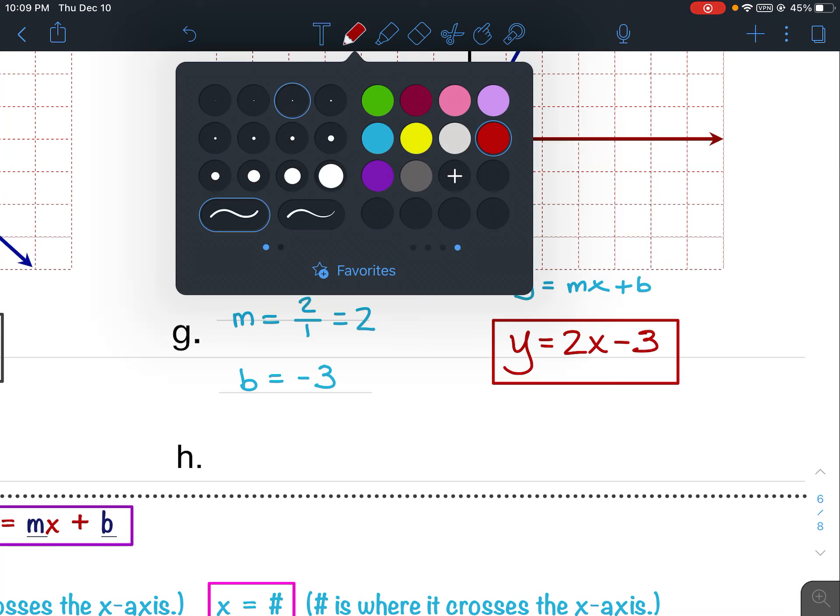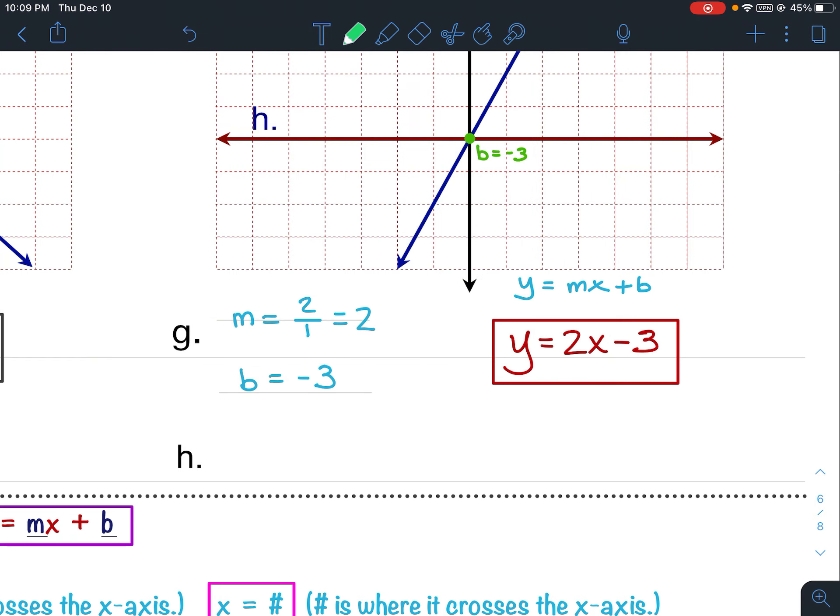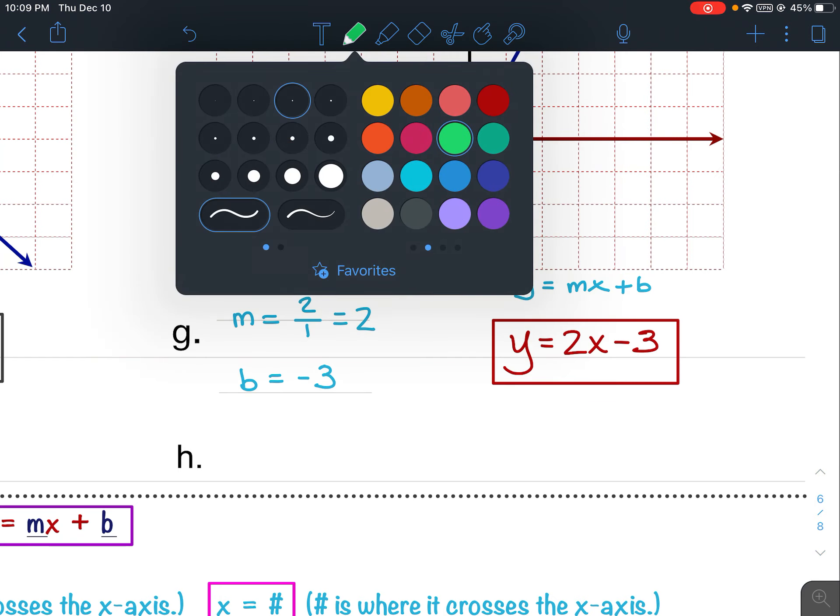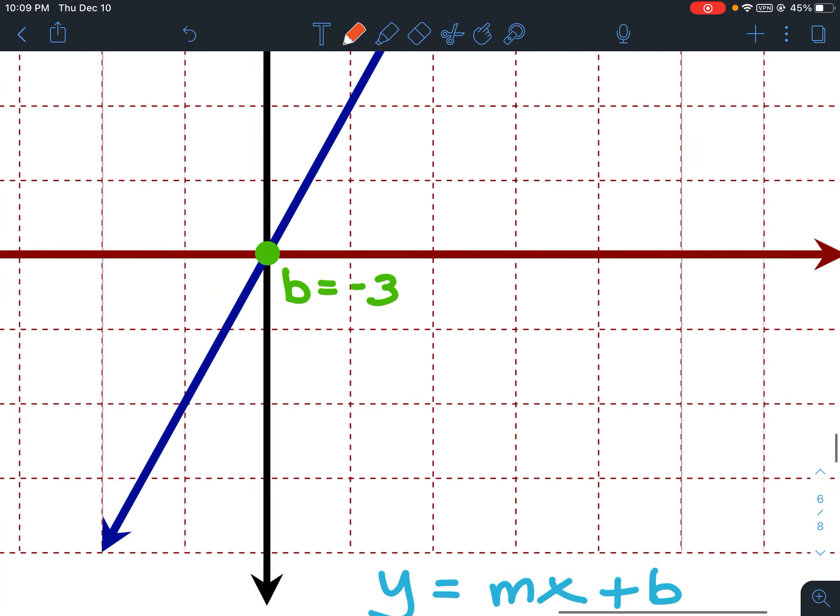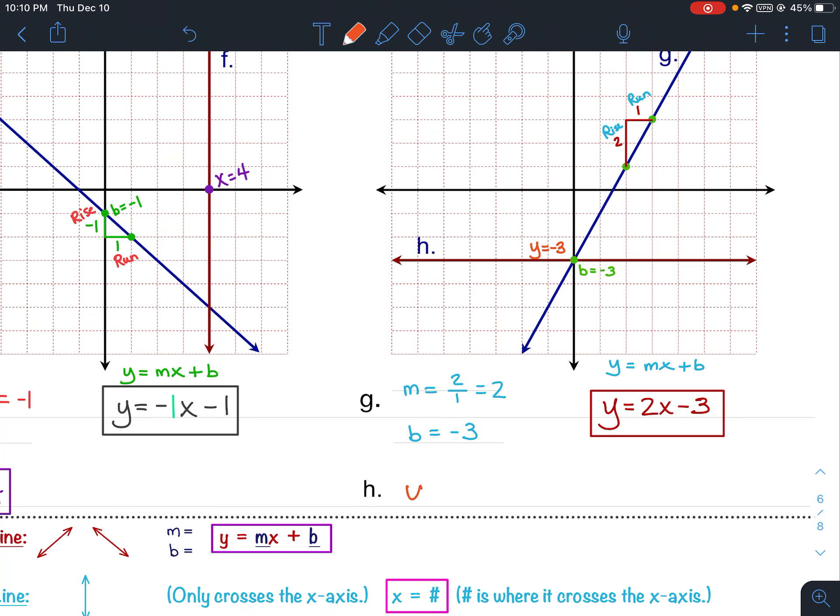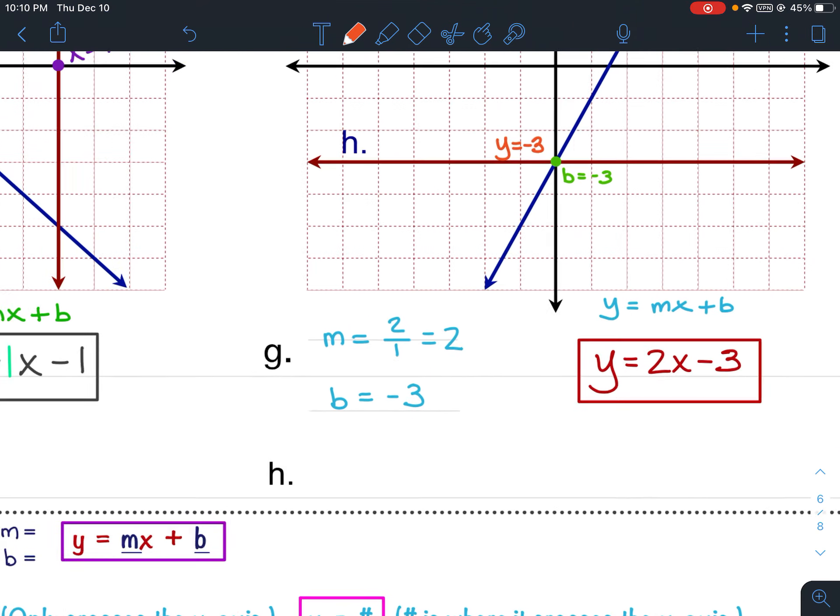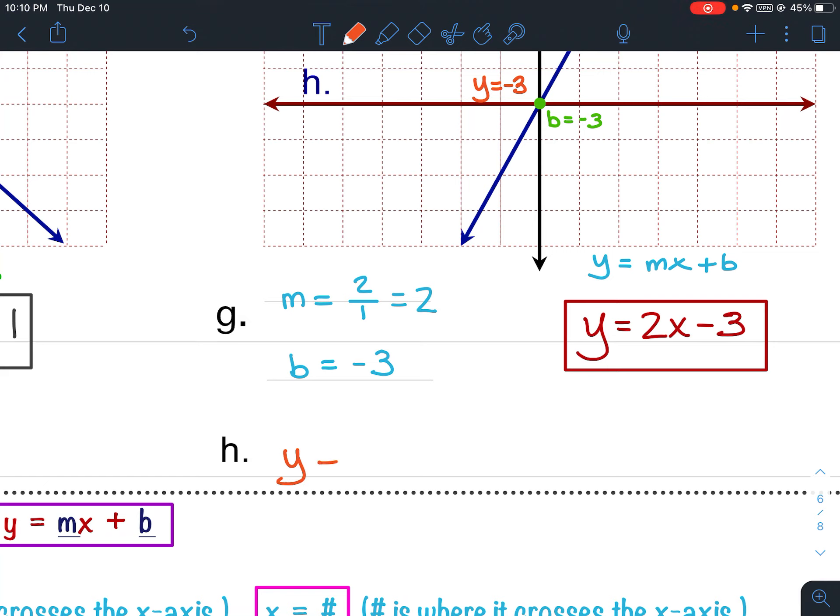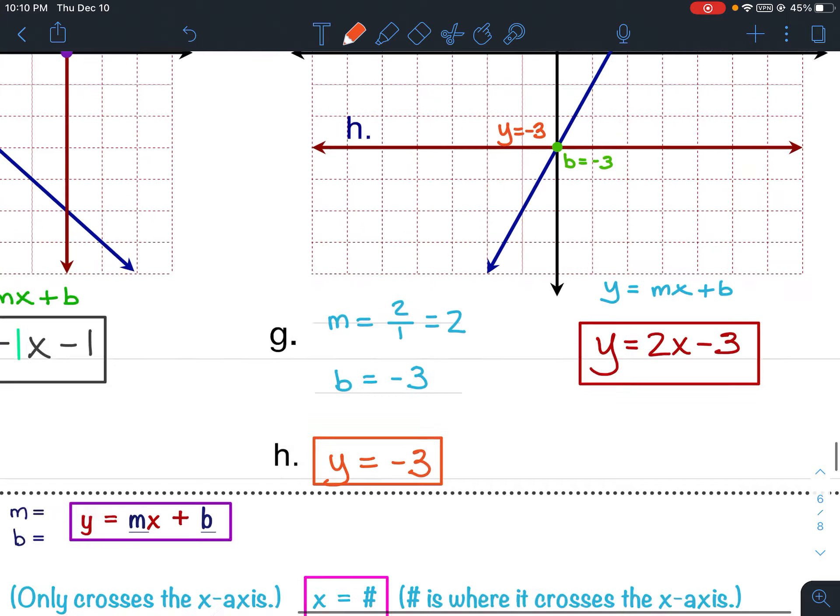For h, it's pretty much already done for us. h is a horizontal line, and it crosses the y-axis at the same place as g, which is negative 3. So, let's put y equals negative 3. And that is our equation for h. y equals negative 3. And that is it.